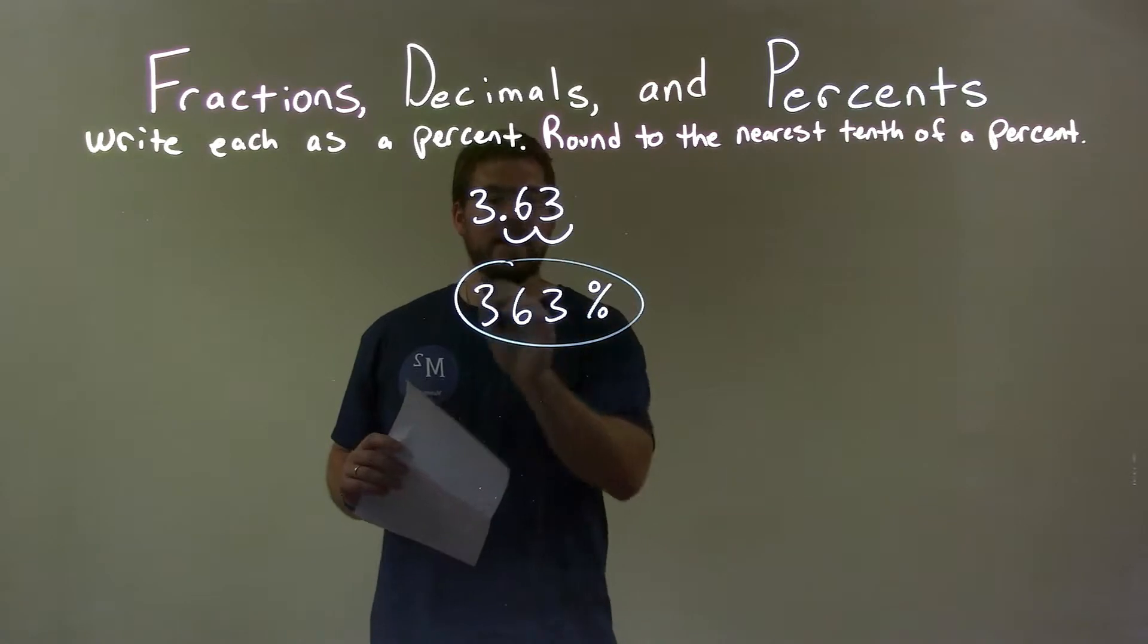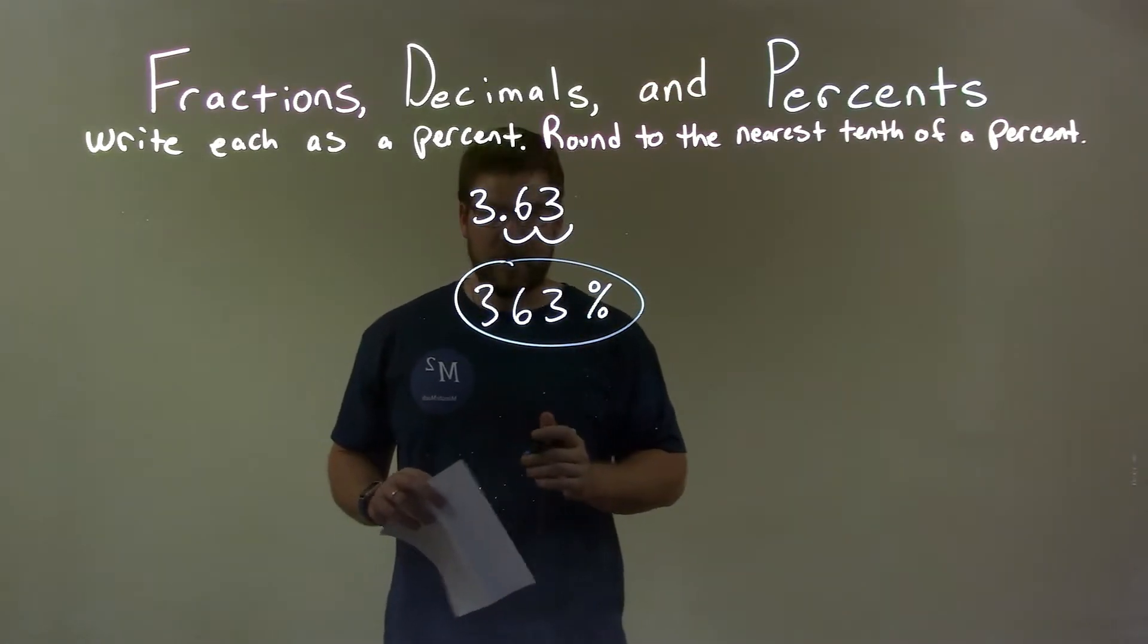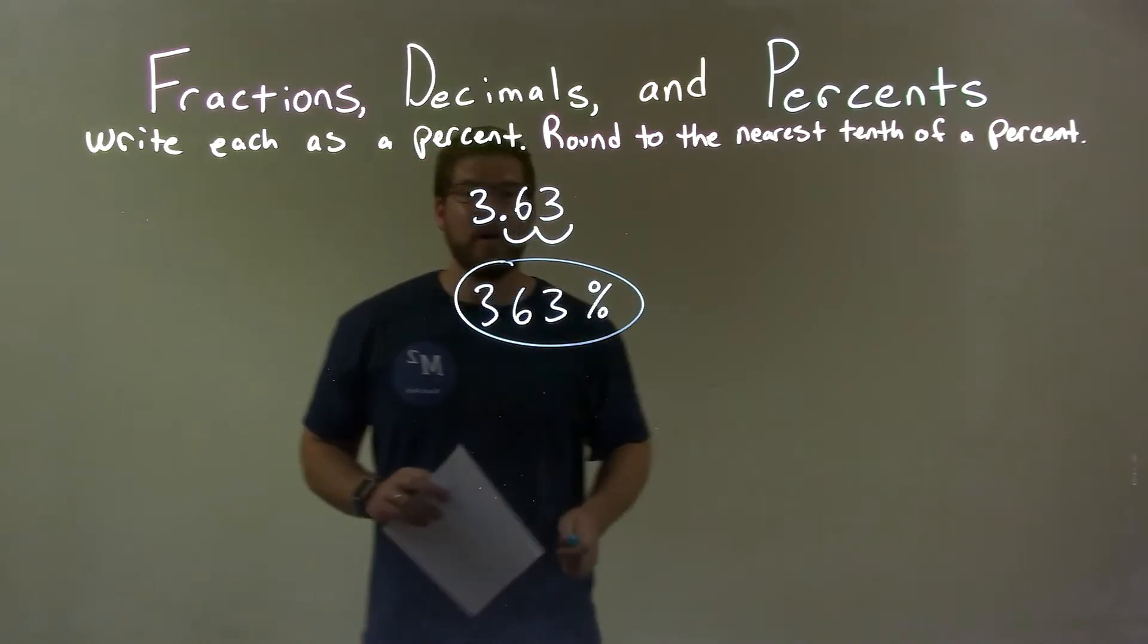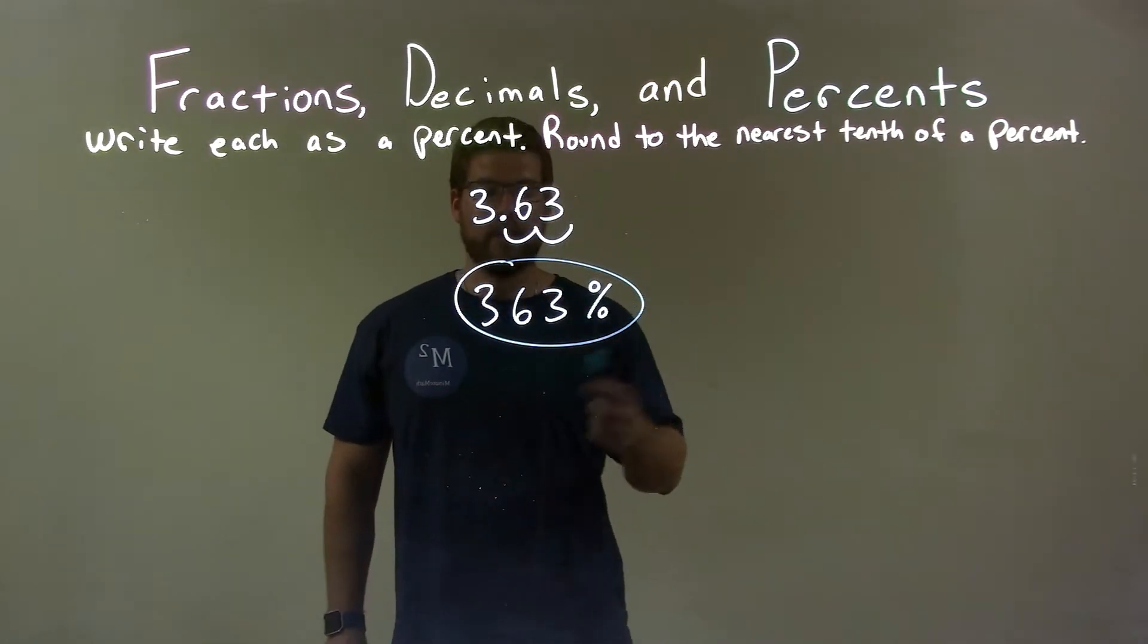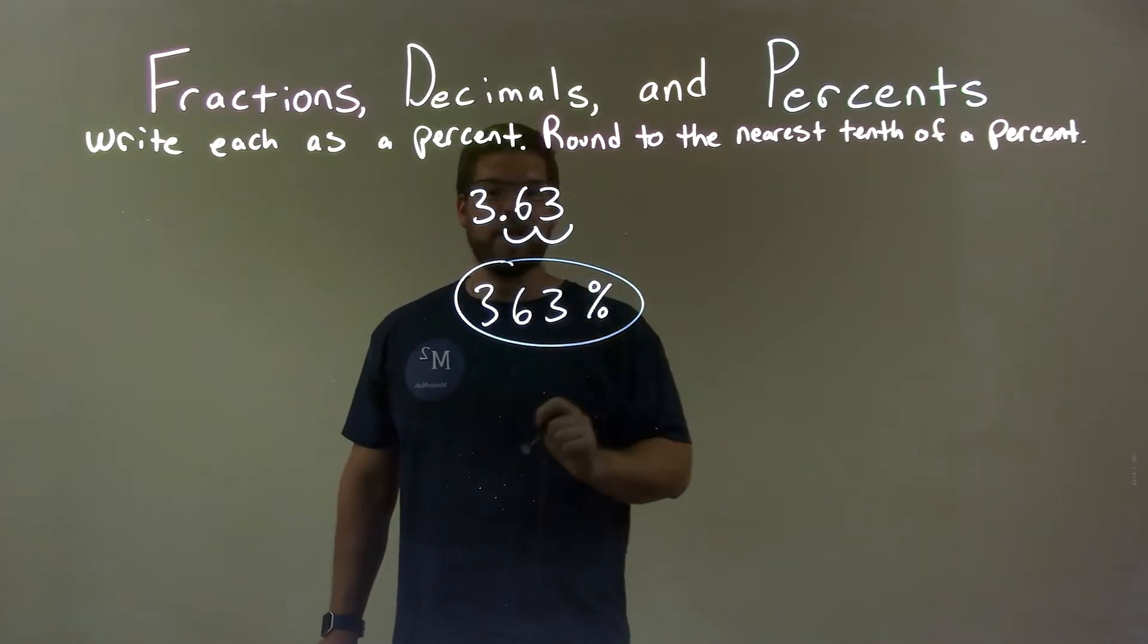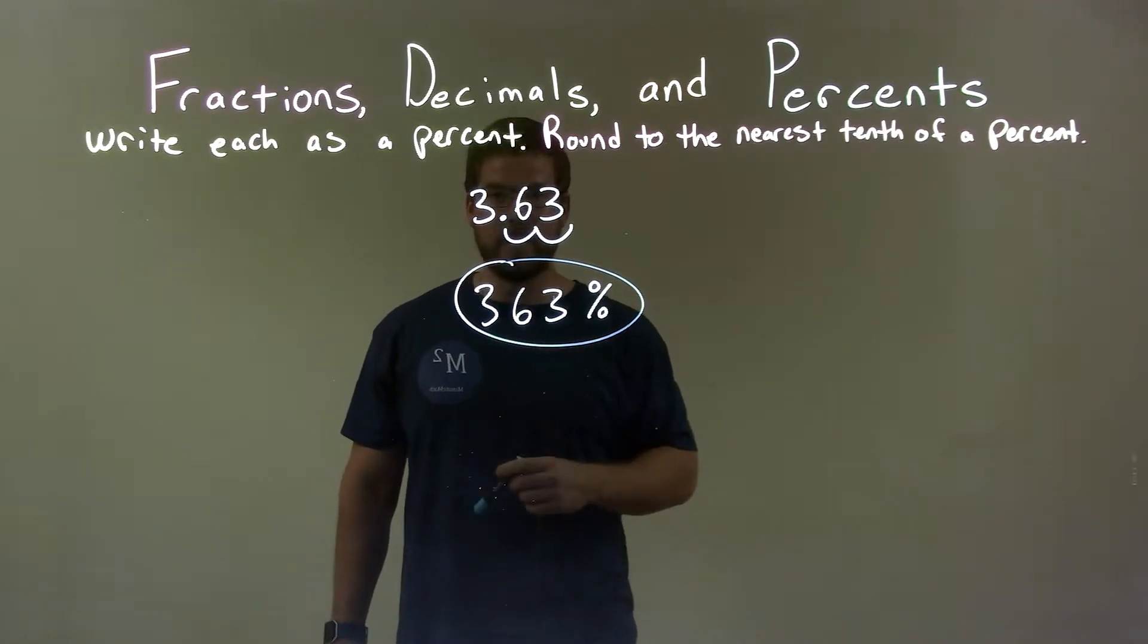Our final answer, 363 percent. So, quick recap. We're given 3.63 and we need to write that as a percent. I take that decimal place and I move it two spots to the right and I get 363, and then we put on a percent and then we're done. Our final answer, 363 percent.